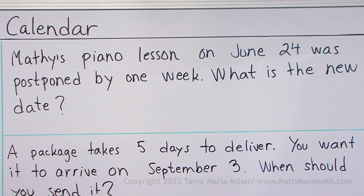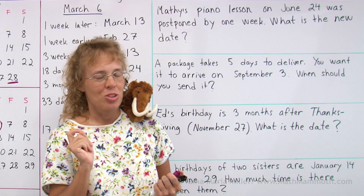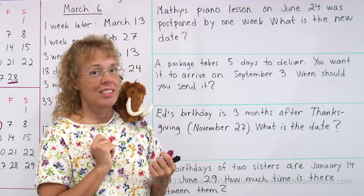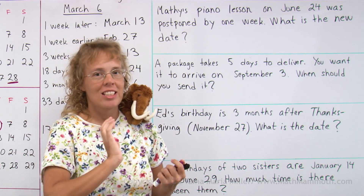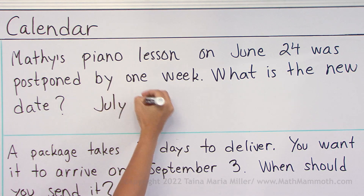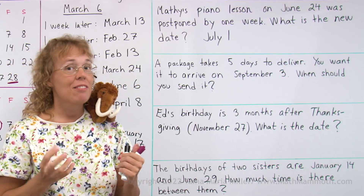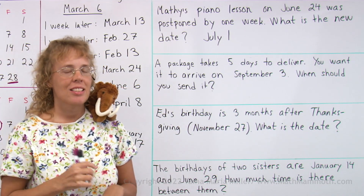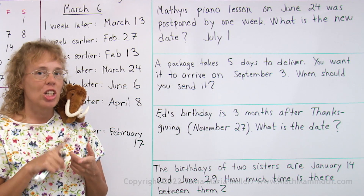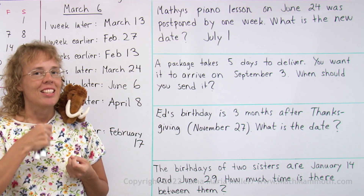Matthew's piano lesson on June 24th was postponed by one week. What is the new date? One week is seven days, so all we really need to do is add 7 and 24, giving us June 31st — but there's one problem: June does not have 31 days. June only has 30 days, so there is no such date as June 31st. It is instead the first day of July. You need to remember what months have 31 and what months have 30 days. The ones with 31 days start with January, then every other month except it switches with July and August — so July and August both have 31. After that it's again every other month having 31 days.